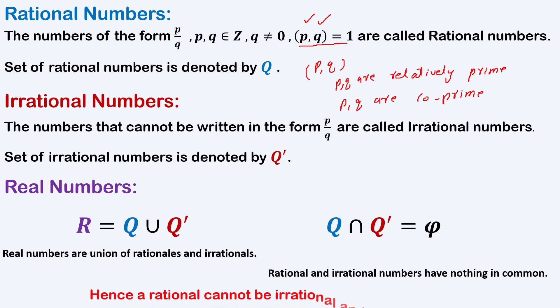A rational number cannot be irrational, and an irrational number cannot be a rational number. Now we go to the proof.